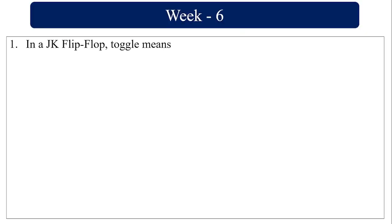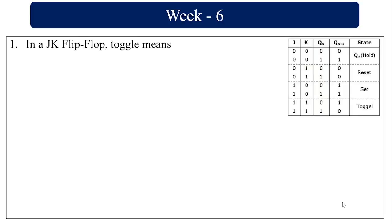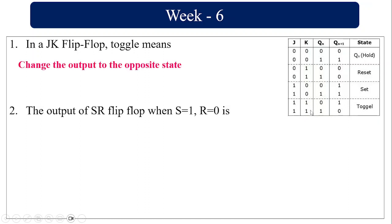In the JK flip-flop, toggle means 0 becomes 1, 1 becomes 0, and this happens when J and K are both equal to 1. So it changes the output to the opposite state.